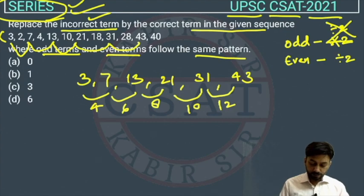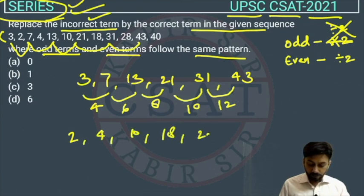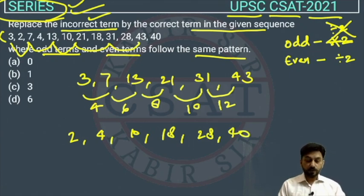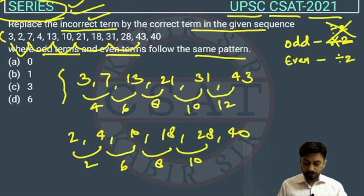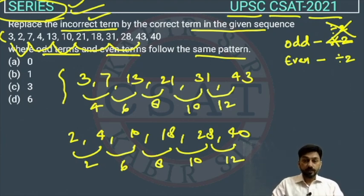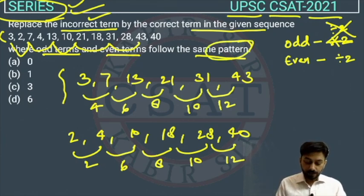Now the even series: the even position numbers are 2, 4, 10, 18, 28, 40. The difference here is 2, the difference here is 6, difference here is 8, and here the difference is 10, and here 12. But in the question it is given that they are following the same pattern.